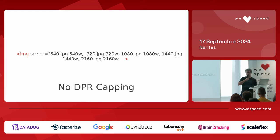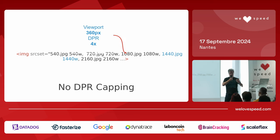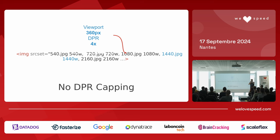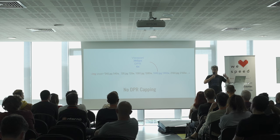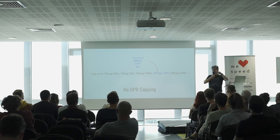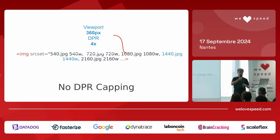Without DPR capping, if you have a modern Samsung phone with a 360-pixel viewport but a device pixel ratio of 4x, the browser selects 360 times 4 = 1440 pixels. If that Samsung phone is on the train from Paris to Nantes on 3G or 4G and needs to download a 1440-pixel image, that's too much. With the picture element I was able to cap images and say don't load images larger than 2x.